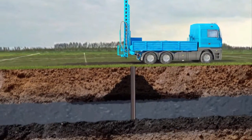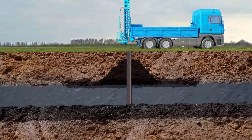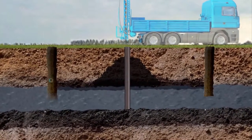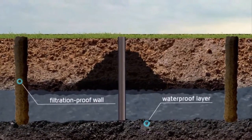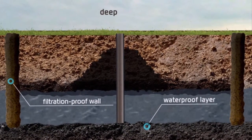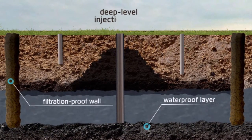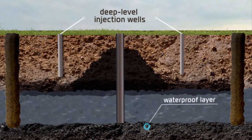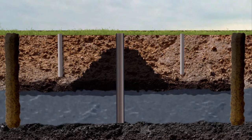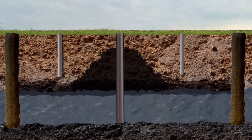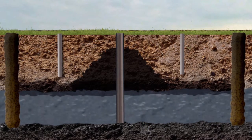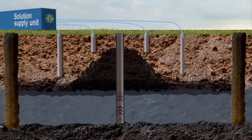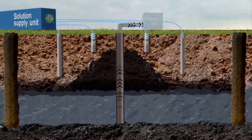First, a well for lowering the water table and pumping out the polluted water, with depth reaching the waterproof layer. Second, deep-level injection wells with an estimated depth 1.5 meters higher than the top of the main contamination level. Third, subsurface injection wells with an estimated depth of 1.5 meters.